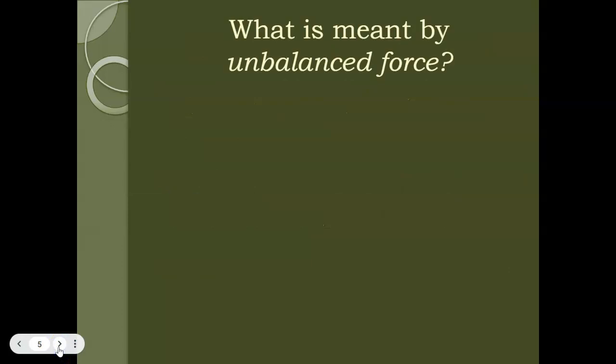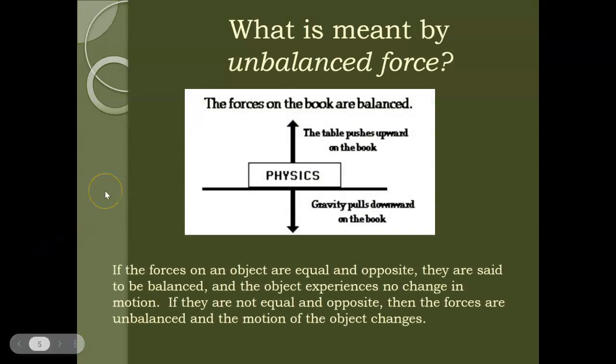So what do we mean by an unbalanced force? Well, forces work on objects from all directions. So here, for example, we have a physics textbook that's resting on a table. So gravity is working on the textbook. It's pushing down on the textbook. It's moving it in a downward direction. At the same time, you have the force of the table that's pushing up on the book as well. So you have forces in both directions. And because these forces are equal, the physics book is at rest. If you have forces that all in all equal zero, then your object is going to be stationary. So if the forces on an object are equal and opposite, they are balanced and the object experiences no changes in motion.